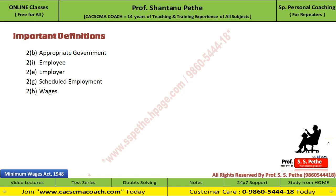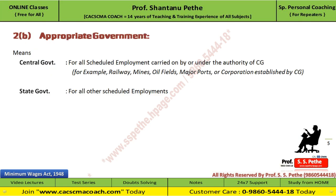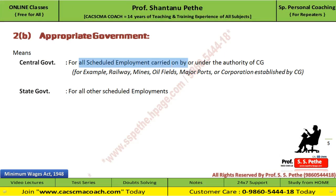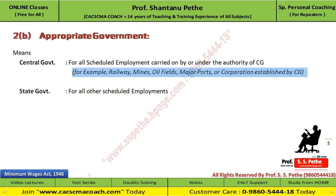There are some important definitions given under this act, and these can be found in exam questions. The definition of appropriate government is defined under section 2, subsection B. For all scheduled employment which are carried on by or under the authority of the central government, the appropriate government will be the central government. For example: railway, mines, oil fields, major ports, and corporations established by the central government.